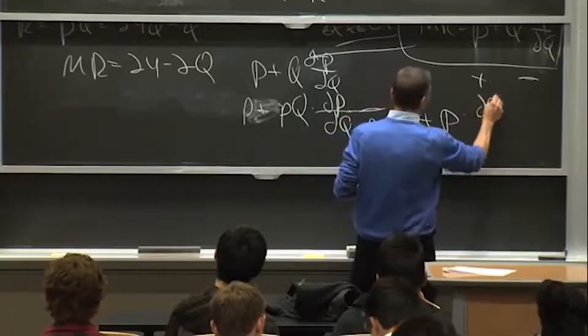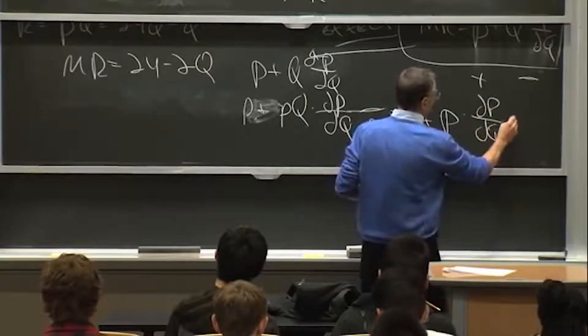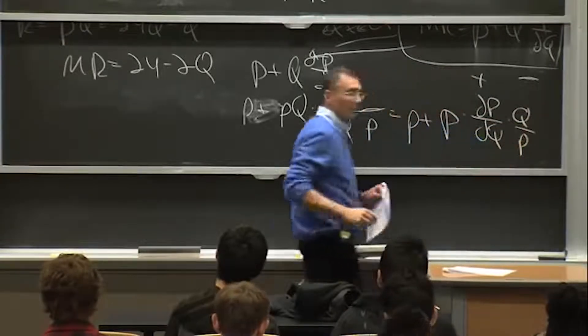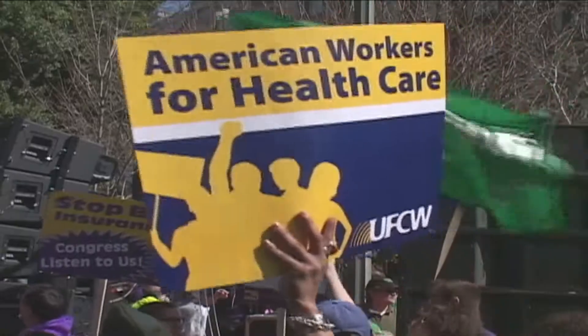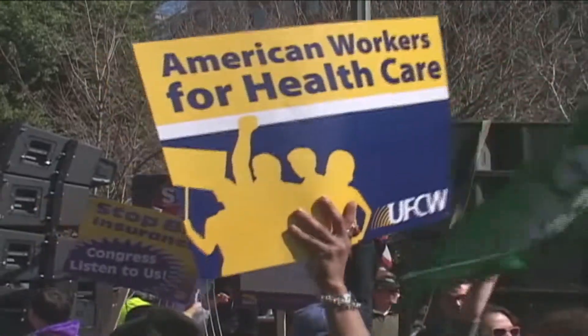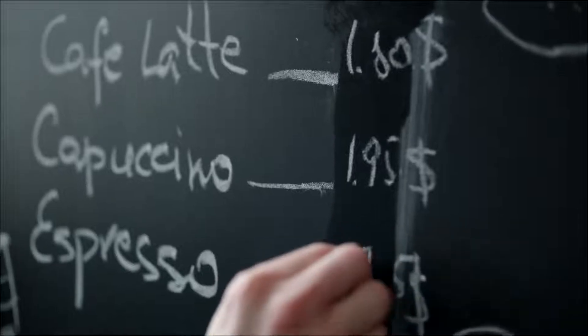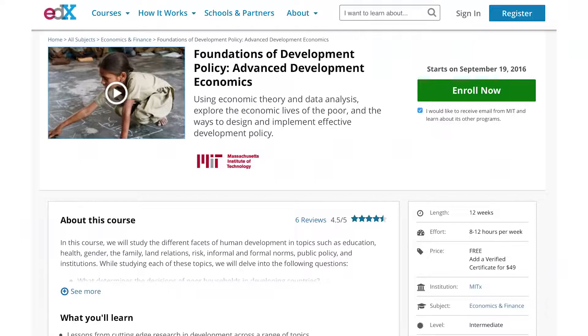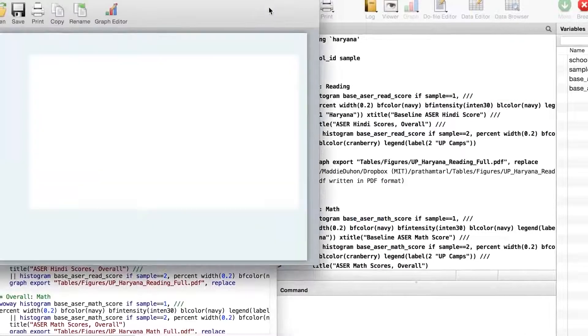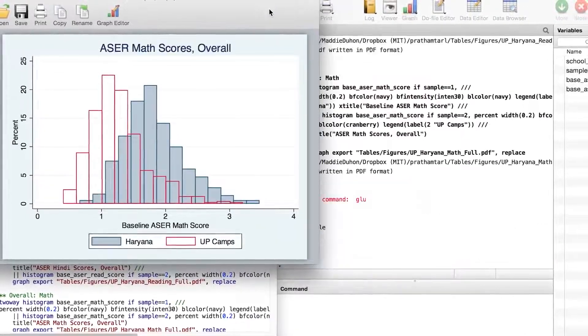Since marginal change is at the heart of economics, you should come into the class with a solid understanding of high school-level calculus. By the end of the course, you'll have a deeper understanding of the complexities of public policy, and a mental toolkit to help you make informed decisions whenever you face a trade-off. You'll also be prepared to take further, more specialized courses in economics. I hope you'll join me in 14.100X as we learn the tools to answer some of the fundamental questions of the human experience using microeconomics.